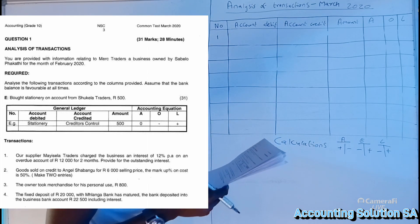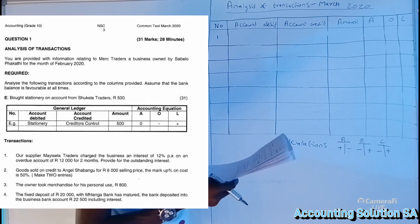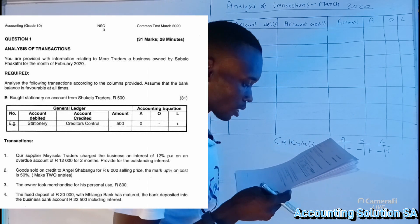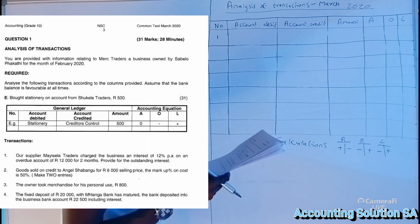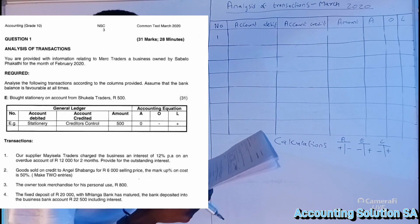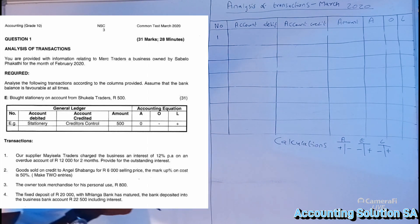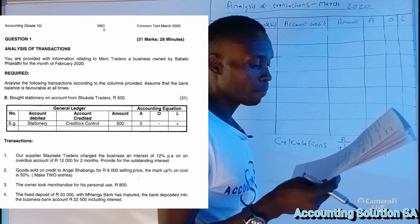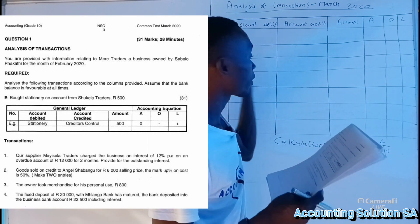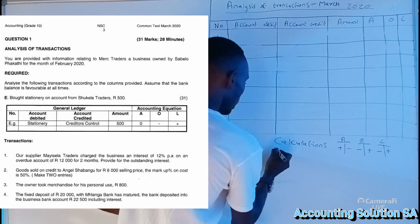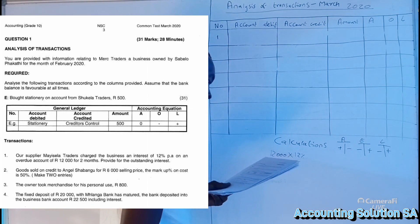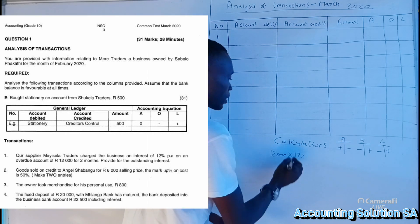Number one: our supplier Marsiela Traders charged the business interest of 12 percent per annum on an overdue account of R12,000 for two months. We need to calculate the outstanding interest. Our supplier charges interest because we were not paying. The interest rate is 12 percent per annum and we've been charged for two months. The account balance is R12,000 and the interest rate is 12 percent.